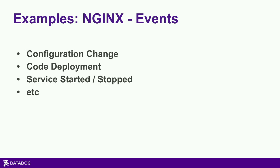Events provide context — things like configuration changes, whether you're doing them or your config management system is. Code deployments: maybe you put a new release on the website and the button to register for DrupalCon is now gone, and you're wondering why you have fewer registrations per minute than yesterday. People can't find the page anymore. That's an event. Or services stalling and stopping, like upgrading Nginx — these all provide context.